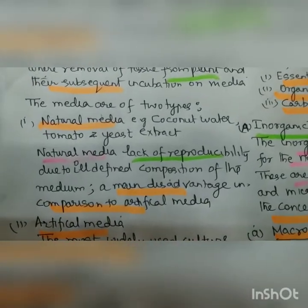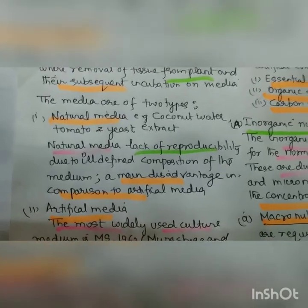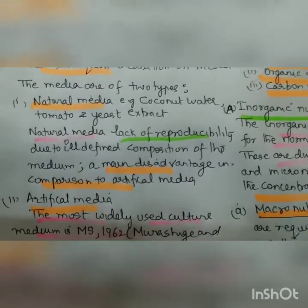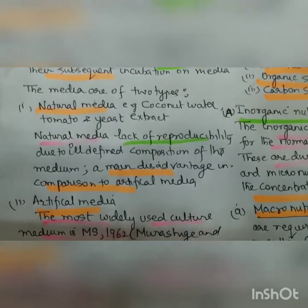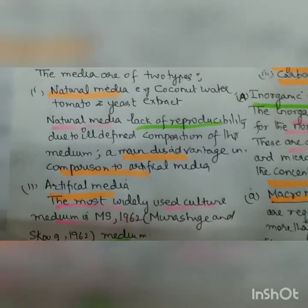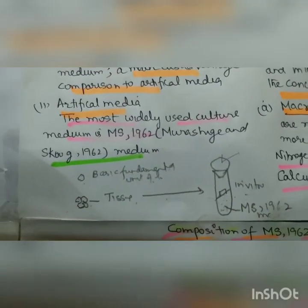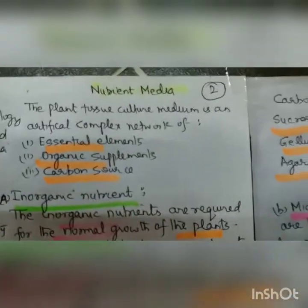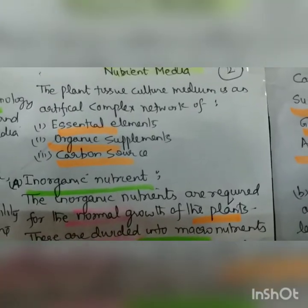The media are of two types: natural media and artificial media. Natural media include coconut water, tomato, and yeast extract. Natural media lack reproducibility due to their ill-defined composition — we don't know the exact composition, so each time we set up an experiment the composition is different. The artificial media most widely used is Murashige and Skoog 1962, also called MS medium. This nutrient medium is an artificial complex network of essential nutrients.